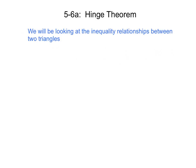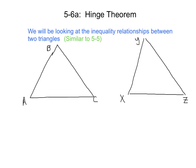To start things off, it's important to know that we'll be looking at the inequality relationships between two triangles. In 5-5 we talked about one triangle, so now we're going to talk about two. And the stuff we're doing today is similar to 5-5. Let's say we have triangle ABC and triangle XYZ. We need a side length to be congruent in each. AB is congruent to XY and AC is congruent to XZ. So you need two sides to be congruent.